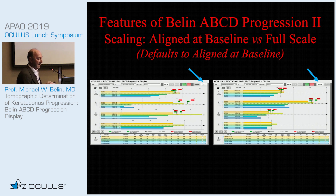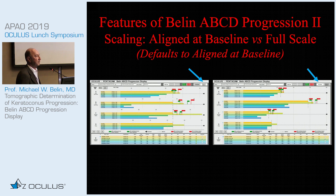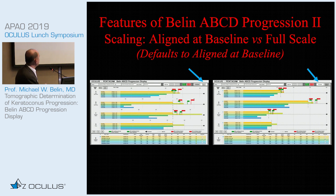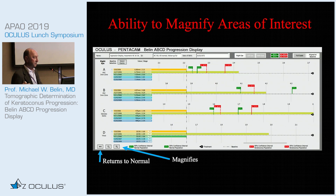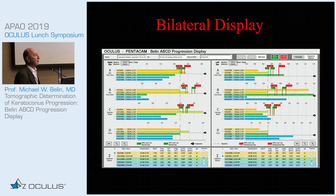There are two ways of displaying the data: aligned at baseline or full scale, defaulting to aligned at baseline. Aligned at baseline maximizes the separation of the confidence intervals for easier statistical significance determination. However, what aligned at baseline loses is the graphical analysis of the different stages — for example, you can't as easily see that the posterior ectasia is greater than the anterior. Full scale spreads out the confidence intervals and is the default because it's simpler to analyze.